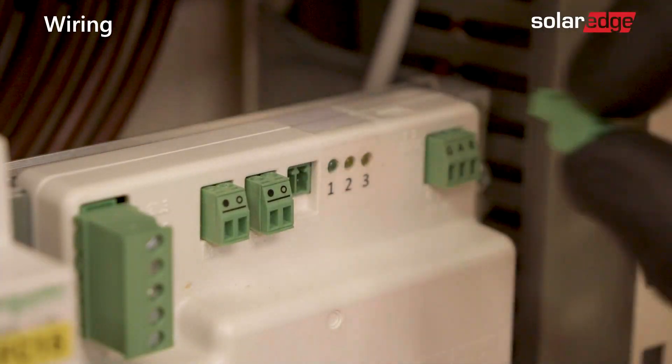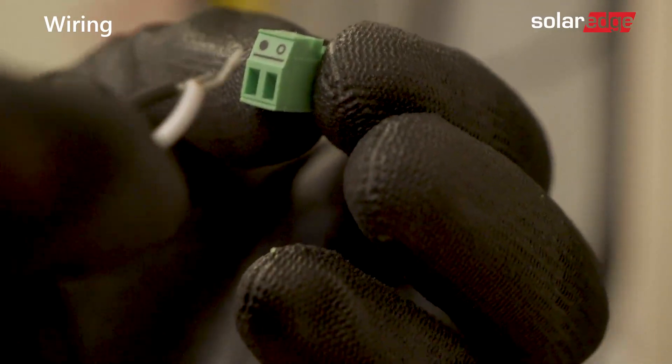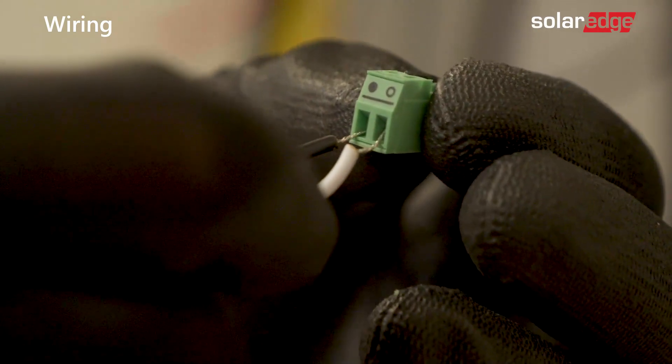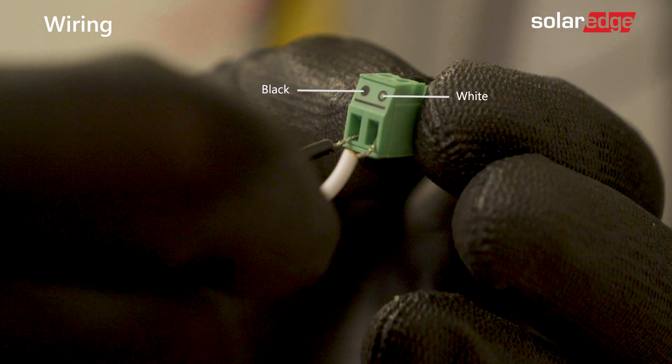Then, connect the CT wires to the three two-pin terminal blocks on the meter. Note that the black and white CT wires should be connected according to the dots printed on the terminal block.